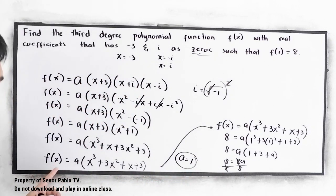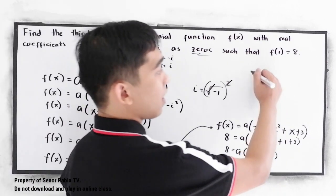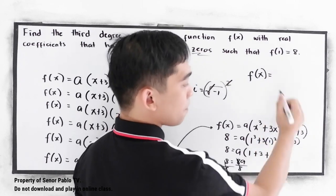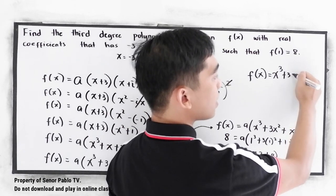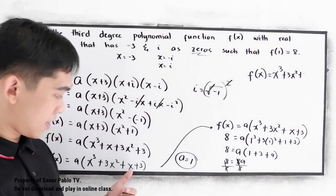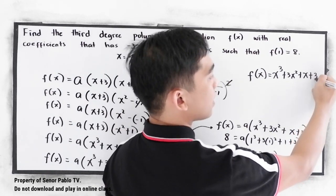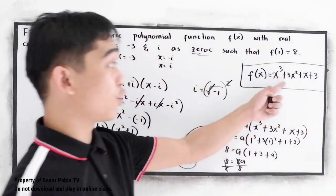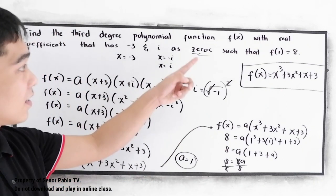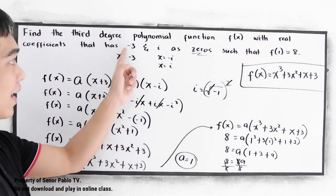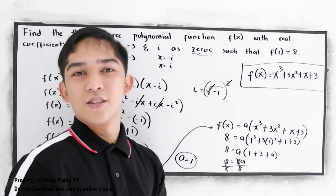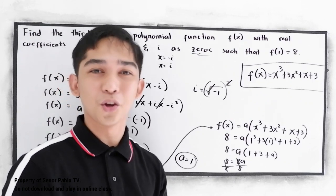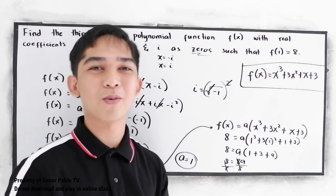So, substituting a equals 1 into our f of x, the final answer is f of x equals x cubed plus 3x squared plus x plus 3. This is now our cubic function that satisfies our zeros negative 3 and i, and our condition f of 1 equals 8. So that is the linear factorization theorem. Thank you for watching Senior Pablo TV.